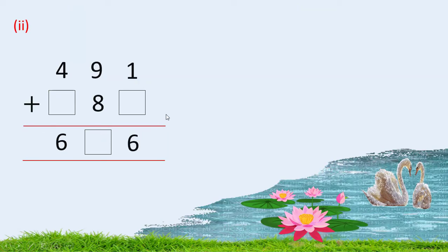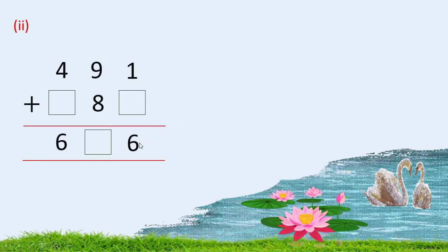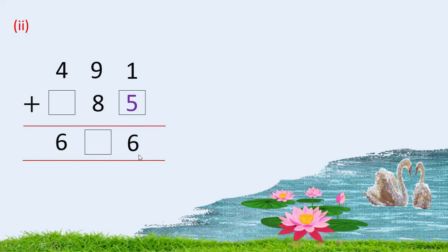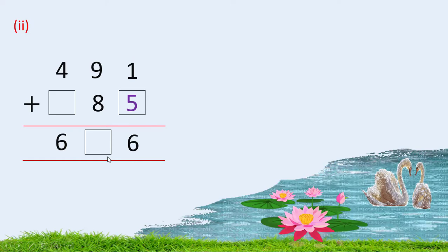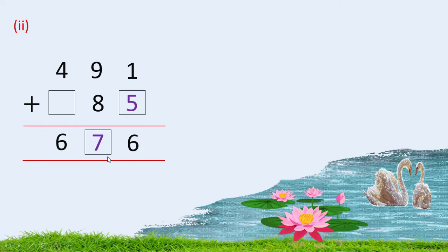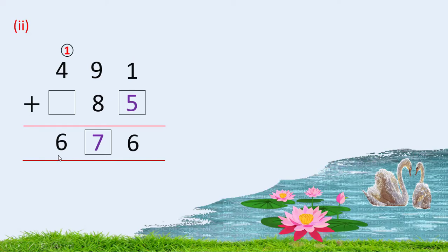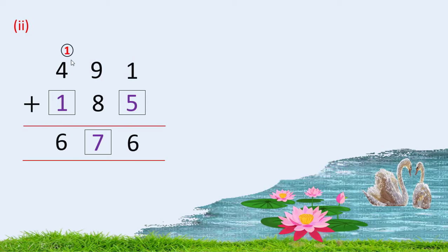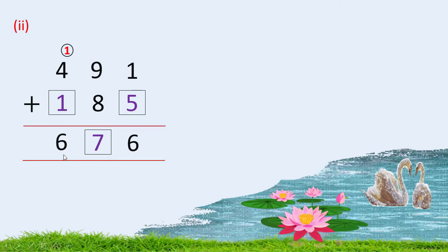In the second part of Question No. 2, what we have to write in this box so that we get 6? The only possibility is 5, so we write 5 here. Add 9 and 8, we get 17; write 7 here and 1 is the carry. What we have to write in this box? Adding 4 and 1 and this carry 1, we get 6.